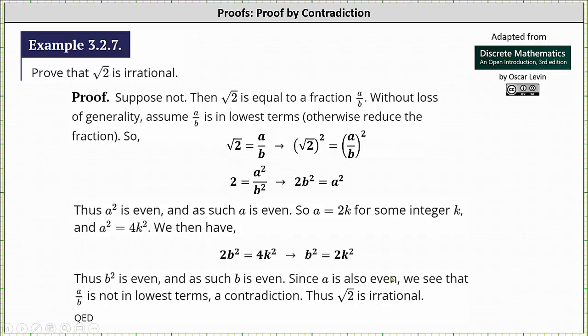Since a is also even, we have that the fraction a over b is not in lowest terms or simplified, which we assumed at the beginning, which gives us a contradiction. Thus, the original statement must be true that the square root of 2 is irrational, and the proof by contradiction is complete.